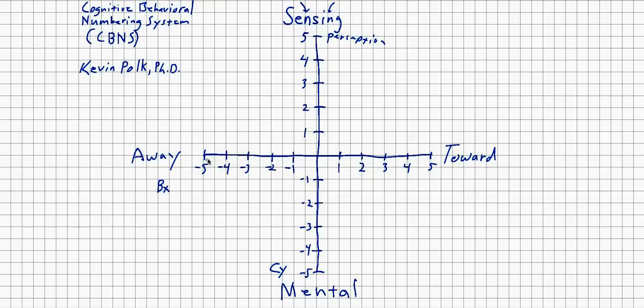And over here, I have BX. This is the behavior line called X because people are really familiar with X. That's the abscissa.